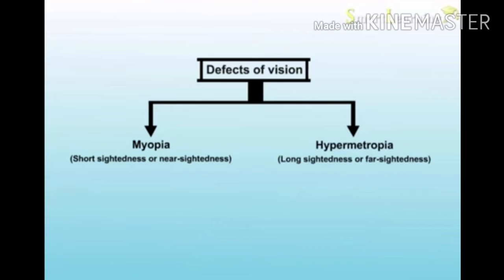These defects of vision can be classified into three main categories. The first one is myopia, otherwise called near-sightedness. The second one is hypermetropia, it is otherwise called farsightedness. And the third one is presbyopia.